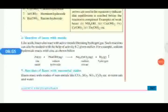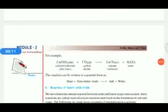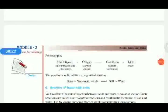We discussed the reaction of acids with metal oxides; now we discuss the reaction of bases with non-metal oxides such as carbon dioxide, sulfur dioxide, etc. Base reacts with non-metal oxides to produce salt and water. For example, calcium hydroxide reacts with carbon dioxide to produce calcium carbonate and water.